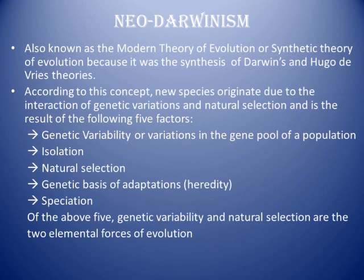Now we start with the Modern Theory of Evolution, also known as Neo-Darwinism, Modern Synthetic Theory, or Modern Theory of Evolution. It is the most accepted theory, which is why it is called the modern theory. It is called synthetic theory because it is formed by a synthesis of Darwin's Theory of Natural Selection and Hugo de Vries' Mutation Theory. According to this concept, new species originate due to the interaction of genetic variations and natural selection.